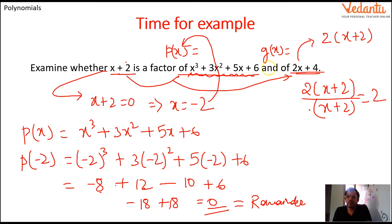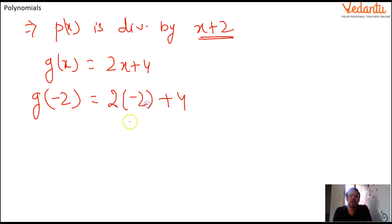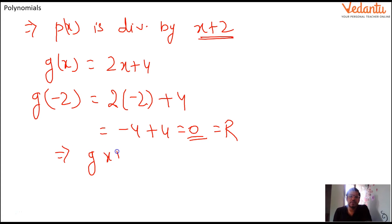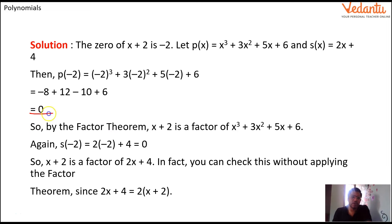Since we got 0, the remainder is 0, which means p(x) is divisible by x + 2. Similarly for g(x) = 2x + 4, g(-2) = 2(-2) + 4 = -4 + 4 = 0. We got 0 again, so the remainder is 0 and g(x) is also divisible by x + 2. You can take a snapshot of this solution. In both cases the remainder is 0, so both polynomials are divisible by x + 2.